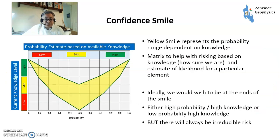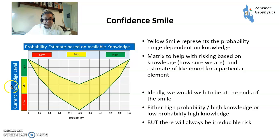The work we do is something called the confidence model. This is to do with the probability of increasing your knowledge and improving the accuracy of your probability. So you've got this matrix of your chance of success — high, medium, and low — and you've got your current knowledge level: low, medium, and high.